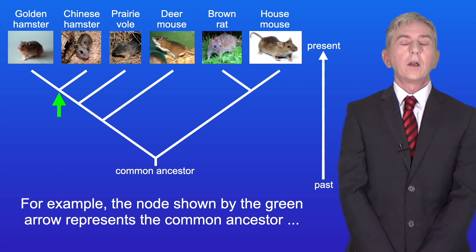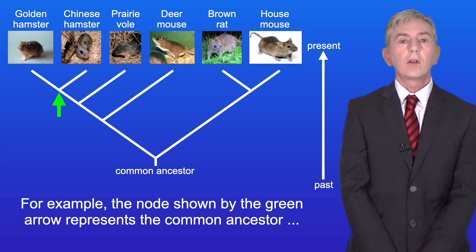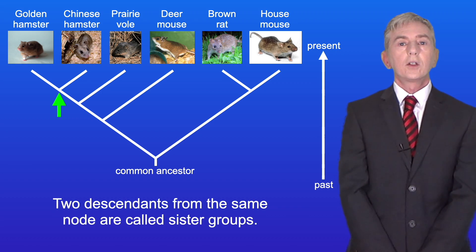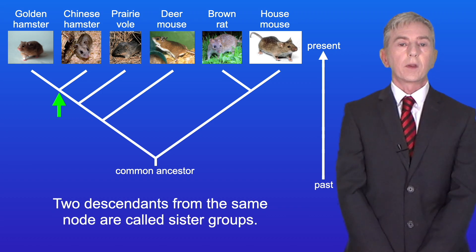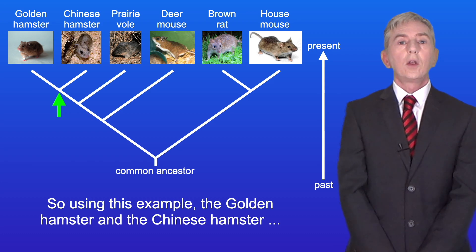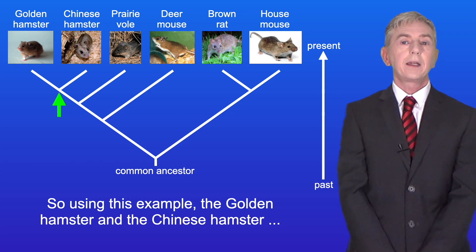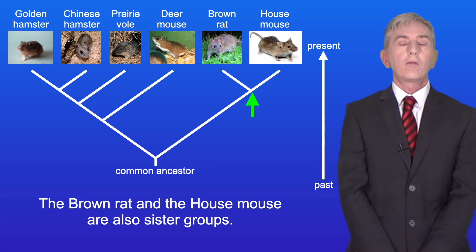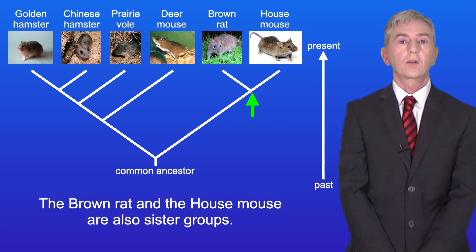For example, the node shown by the green arrow represents the common ancestor of the golden hamster and the Chinese hamster. Two descendants from the same node are called sister groups. So using this example, the golden hamster and the Chinese hamster are sister groups. The brown rat and the house mouse are also sister groups.